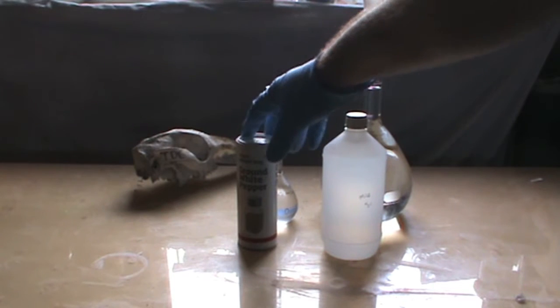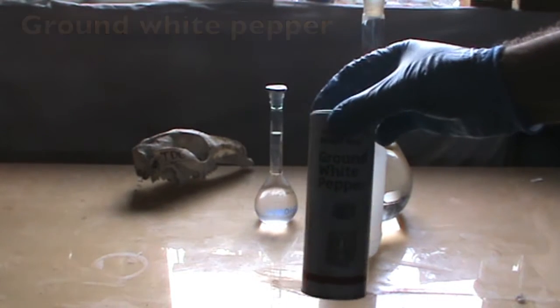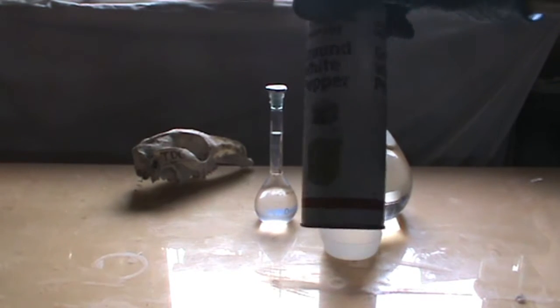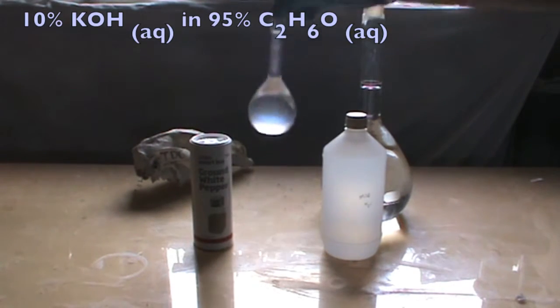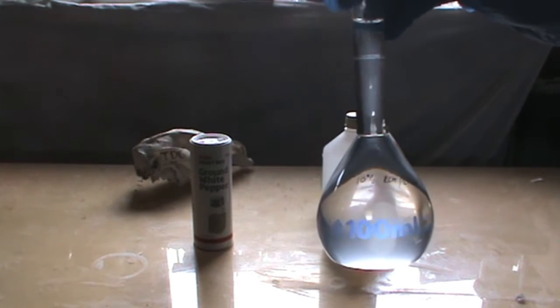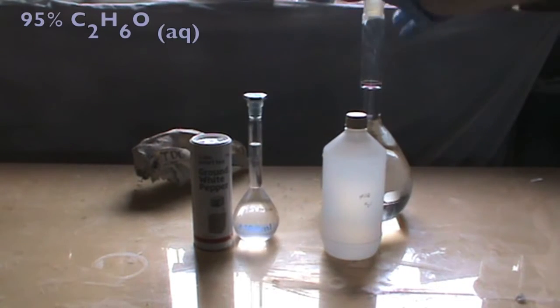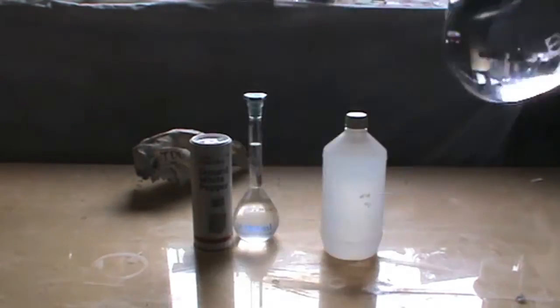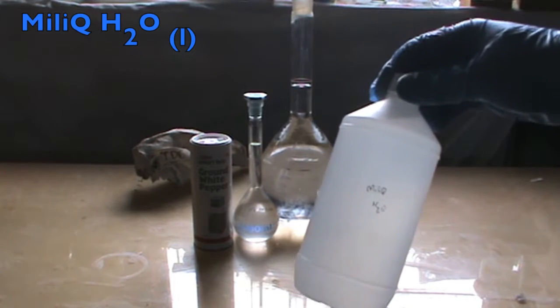To start the extraction, we need ground white pepper. I bought mine from the local grocery store. 10% potassium hydroxide solution in 95% ethanol, 95% ethanol, and millipore water.